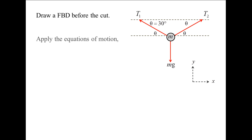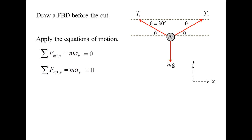Next, we apply the equations of motion. The sum of the external forces in the x-direction is equal to the sphere's mass times the acceleration in the x-direction, and the sum of the external forces in the y-direction is equal to the sphere's mass times the acceleration in the y-direction. The acceleration is zero in both directions since the sphere is at rest when suspended by the two wires.